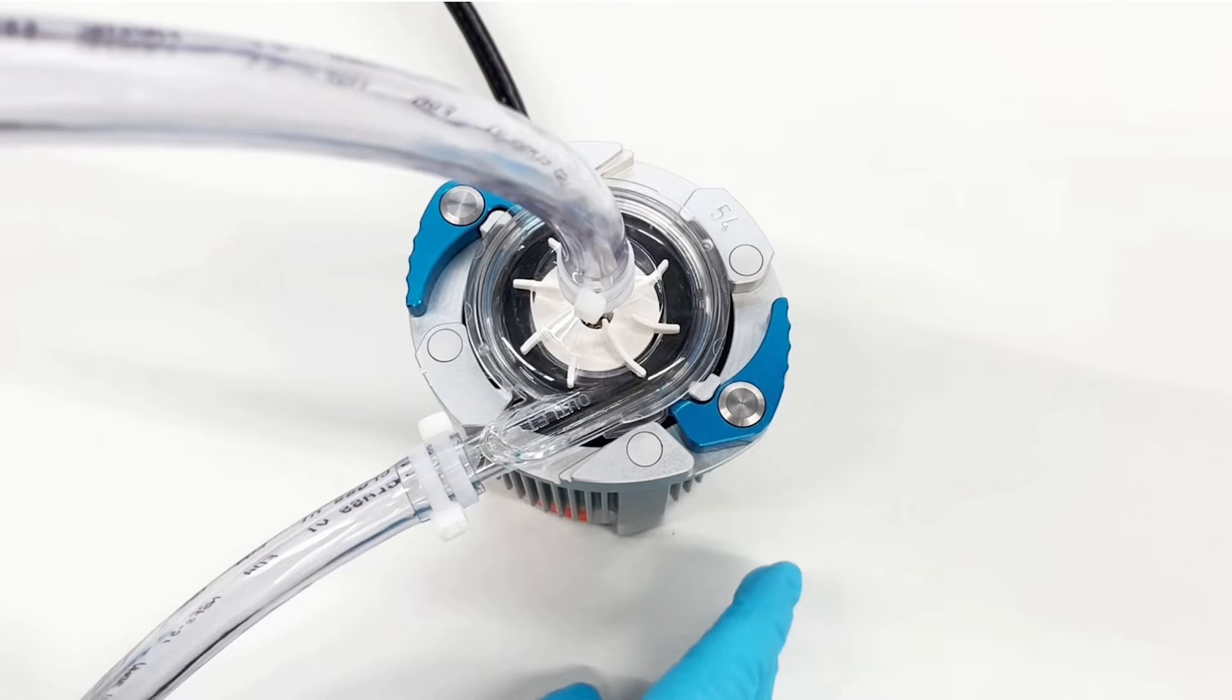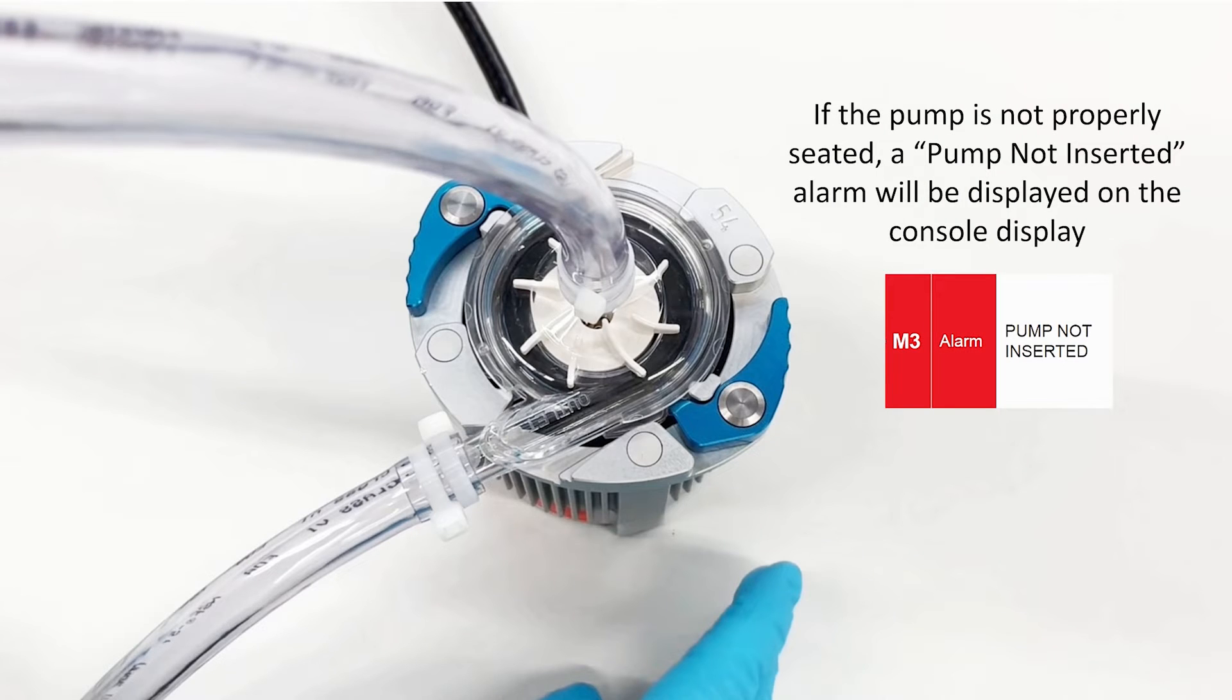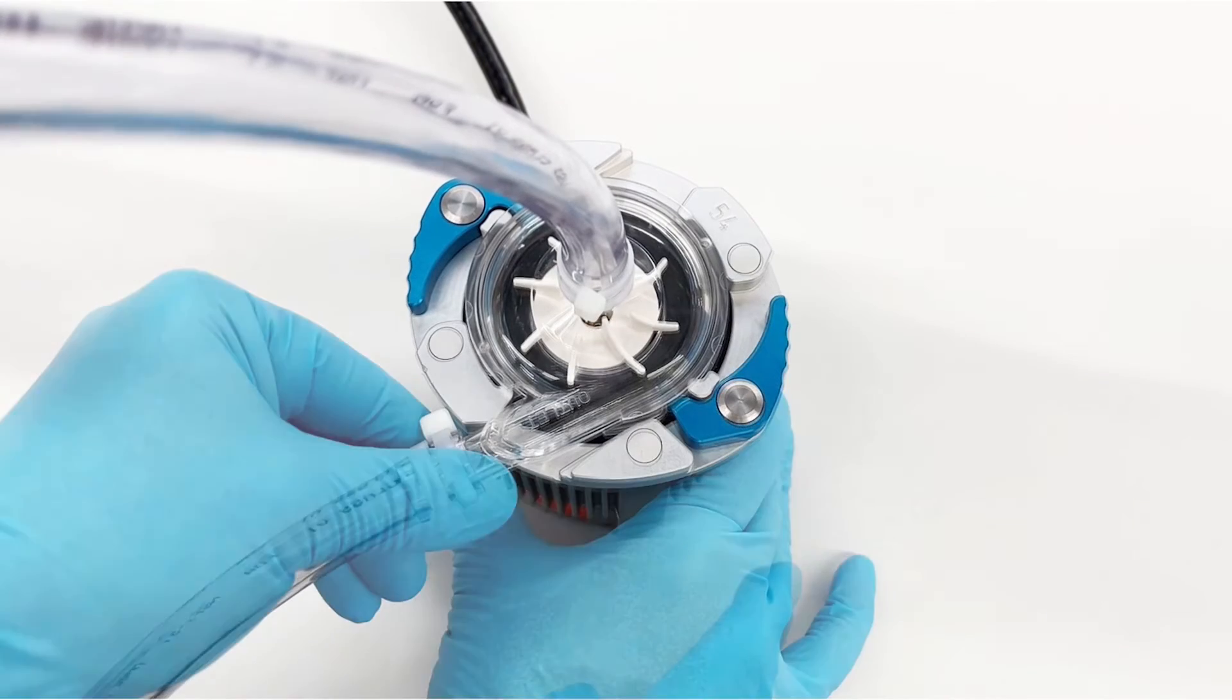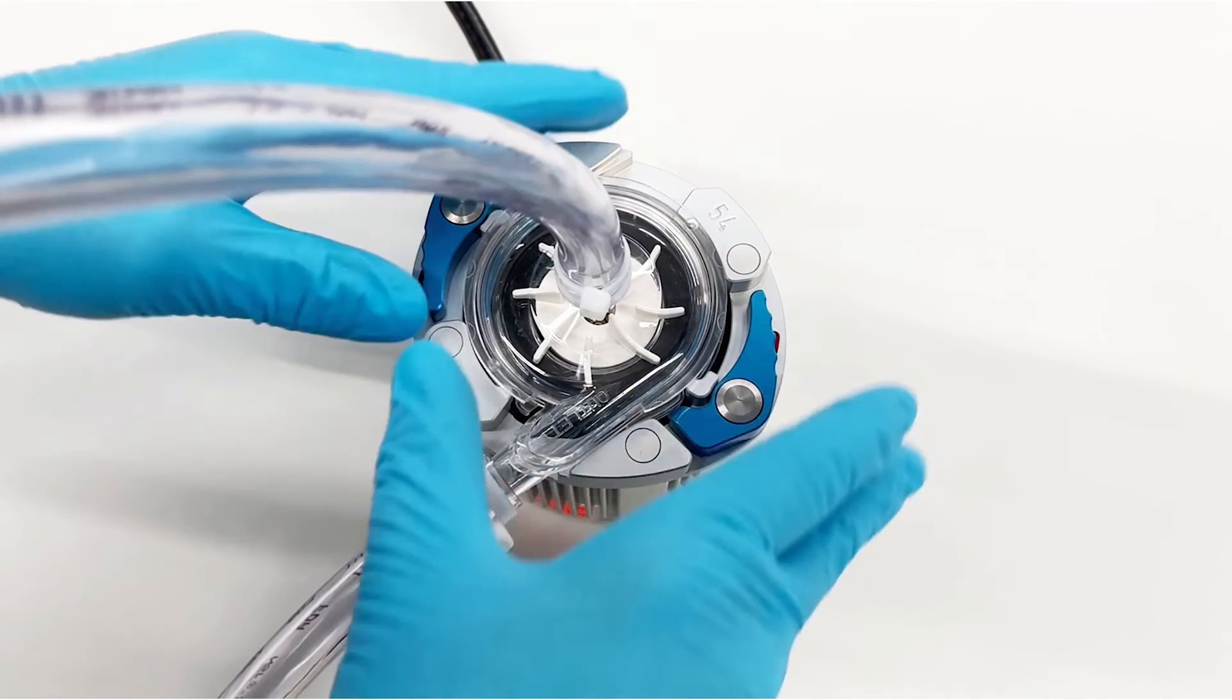Once locked, the levers will be completely extended and the red indicator will no longer be visible. If the pump is not properly seated, an alarm will be displayed on the console display. To remove the blood pump from the motor, squeeze both locking levers and rotate the pump counterclockwise.